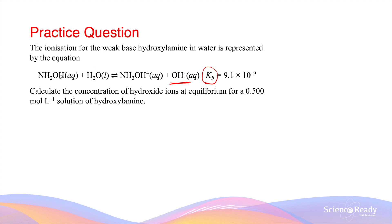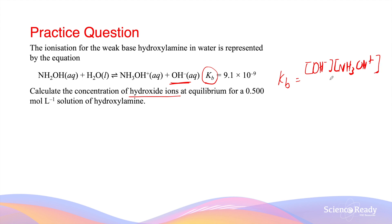For this weak base, hydroxylamine, Kb is 9.1 times 10 to the minus 9. Calculate the concentration of hydroxide ions at equilibrium for a 0.5 mol per liter solution of hydroxylamine. To calculate the hydroxide concentration, the Kb expression is the hydroxide ion concentration times the conjugate acid concentration (NH₃OH⁺), divided by the weak base concentration (NH₂OH). Remember, we don't include water in the equilibrium constant because its concentration remains relatively constant as the reaction proceeds.